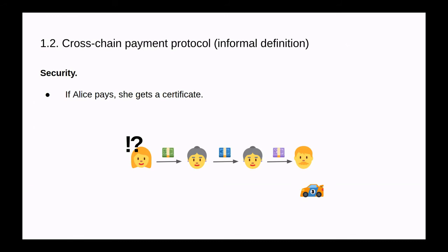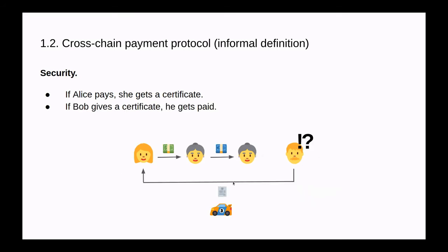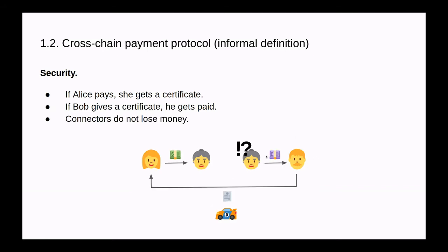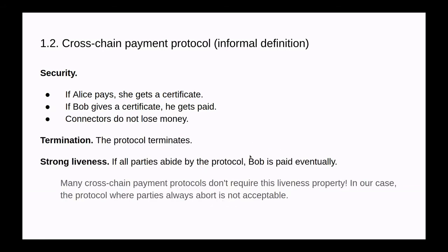We can now define the correctness properties for cross-chain payment protocols. Let's start with security properties. The first one is that if Alice pays something, she has to get the certificate back. Similarly, if Bob issues the certificate, he should get paid. And finally, connectors should not lose money. We also want the protocol to terminate. Finally, we want some success guarantees — we call that strong liveness — that is to say that if all parties are correct, then Bob is eventually paid. Note that many cross-chain payment protocols don't require this liveness property. In our case, a protocol where parties always abort is not acceptable, even if such a protocol would terminate and respect the security property.